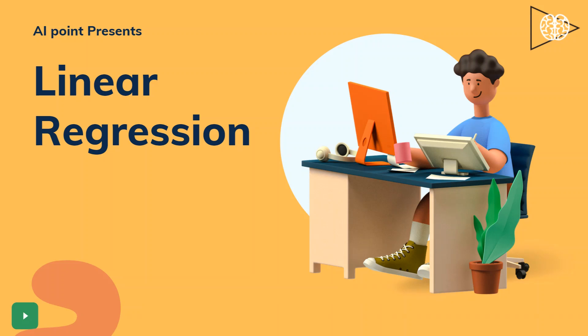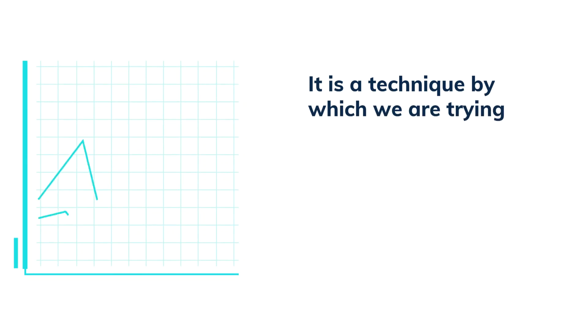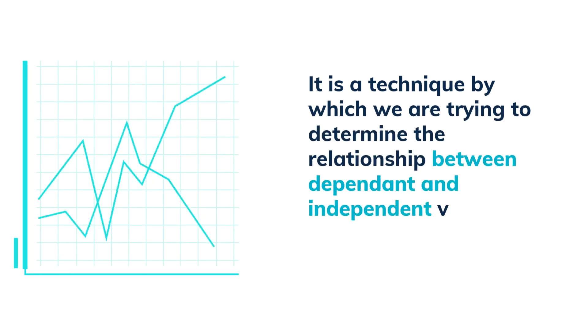Hello everyone, hope you are doing fine. This video covers one of the most basic machine learning algorithms, which is linear regression. Now what is linear regression? Linear regression is a technique by which we are trying to determine the relationship between dependent and independent variables.